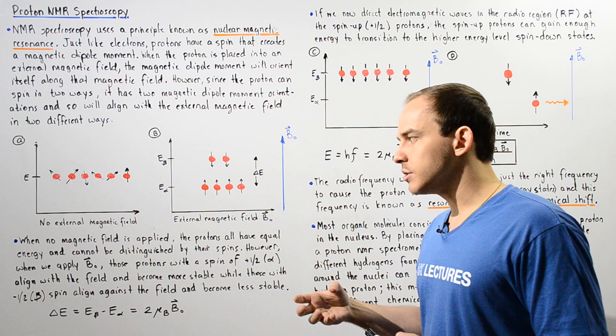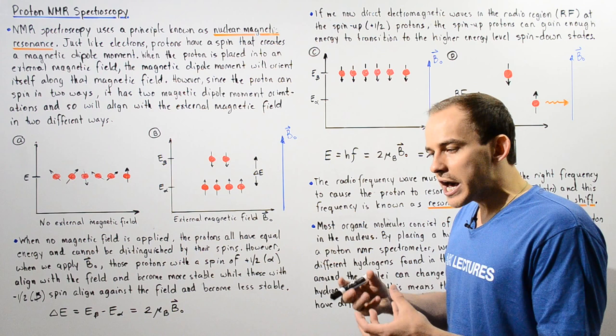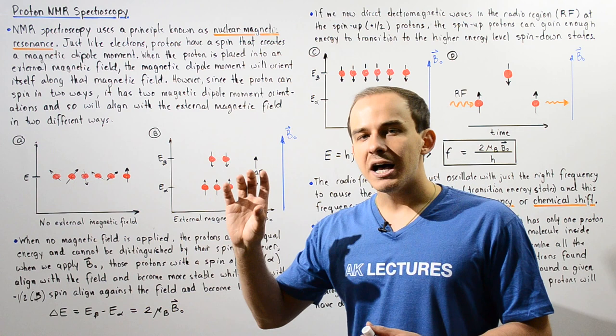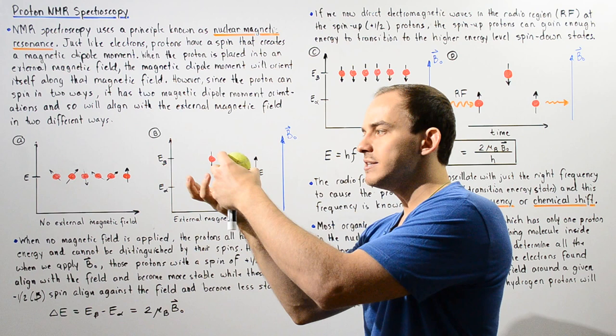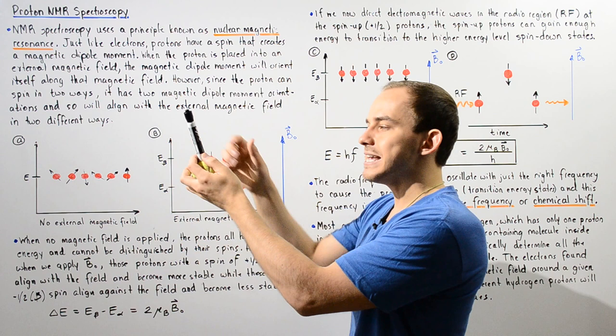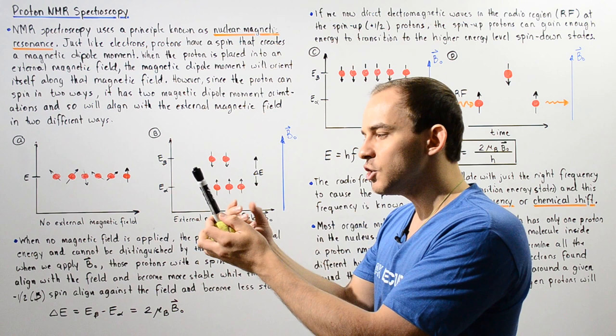Protons have a certain amount of positive charge, and that positive charge can spin in one of two ways. If the proton's electric charge spins in one direction, it creates a magnetic dipole moment that points in that direction — this is known as spin up, and it has a value of positive one half.